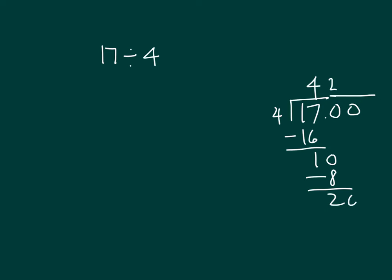Add a 0. Drop a 0. 20 divided by 4 is 5. And our decimal point. Let's see what that looks like with place value chart.